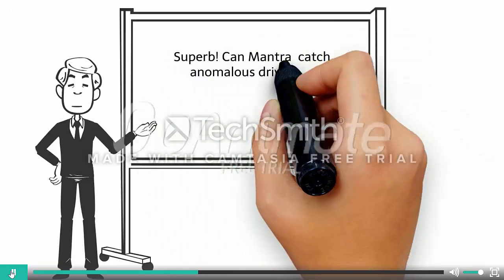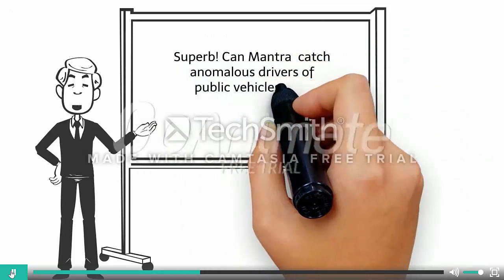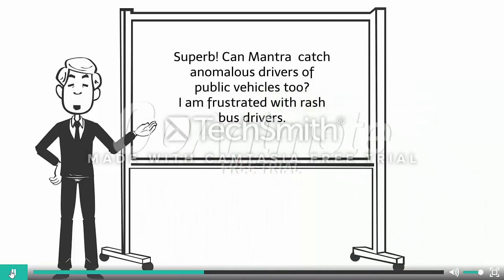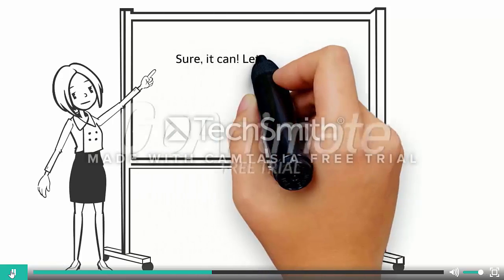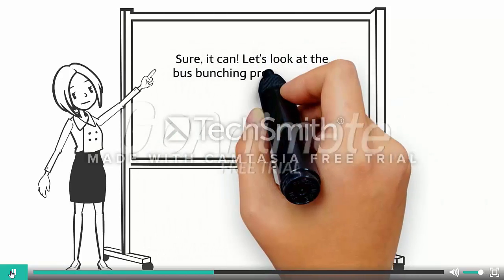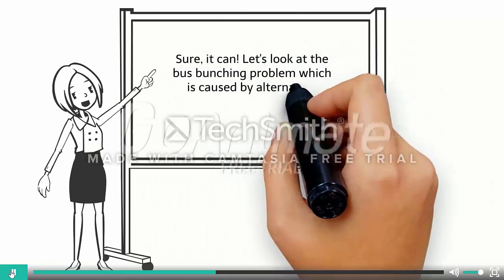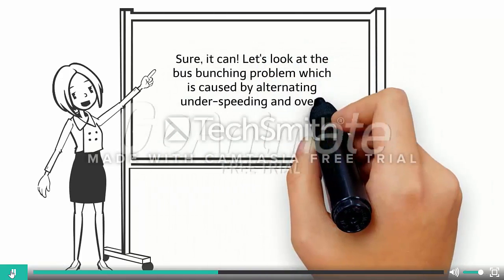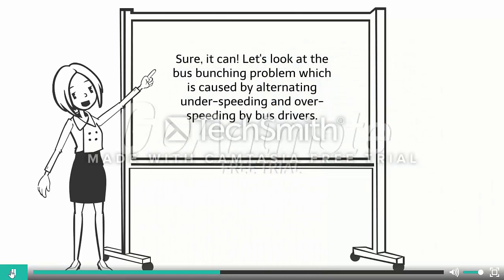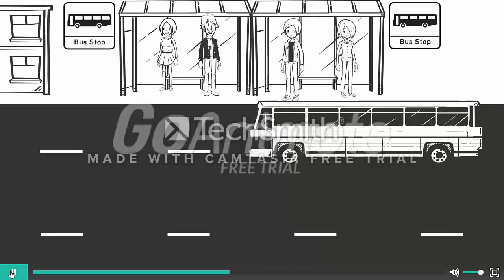Can MANTRA catch anomalous drivers of public vehicles too? I am frustrated with rash bus drivers. Sure, it can. Let's look at the bus bunching problem, which is caused by alternating under-speeding and over-speeding by bus drivers.